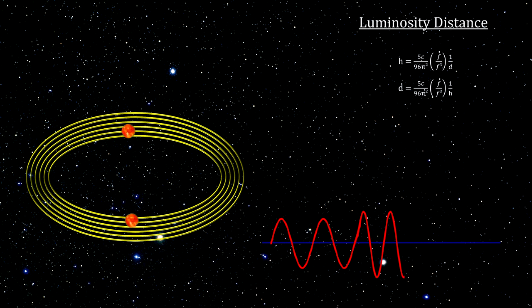Because this distance is based on gravitational wave luminosity, it is called the luminosity distance. For most all gravitational wave sources, this will be the only way to figure out how far away they are.